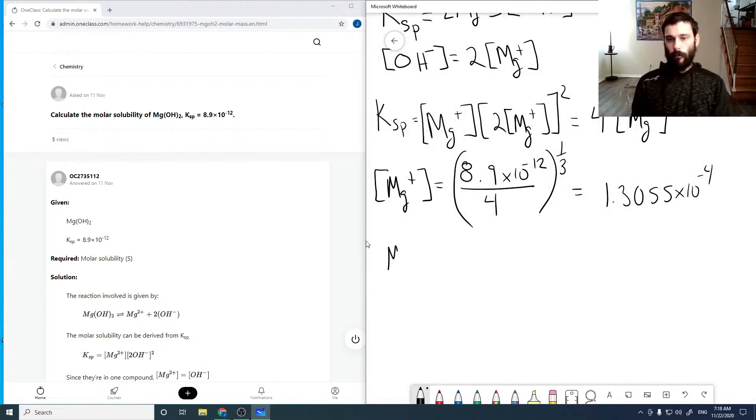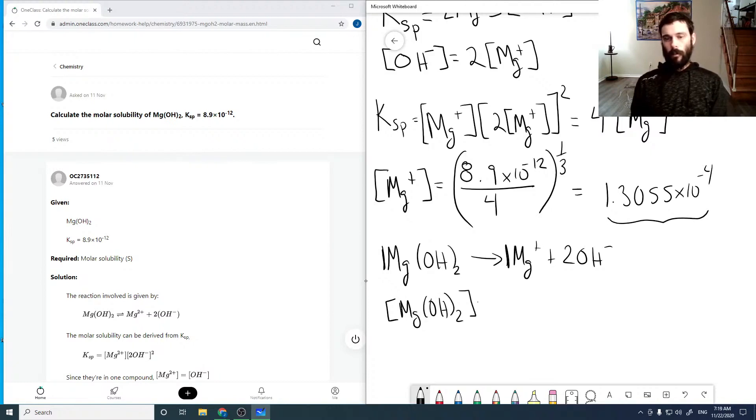We have magnesium hydroxide going to Mg²⁺ plus 2 OH⁻, so the reaction is one to one in these two species, so this means that we can dissolve this many moles of magnesium hydroxide.